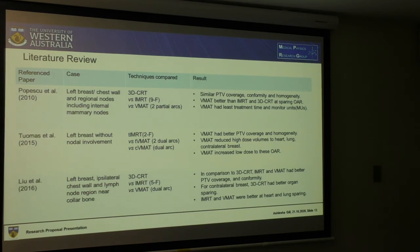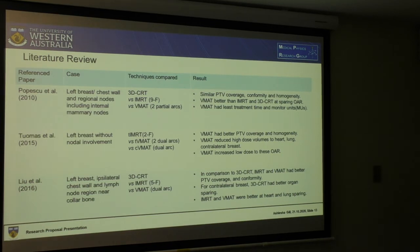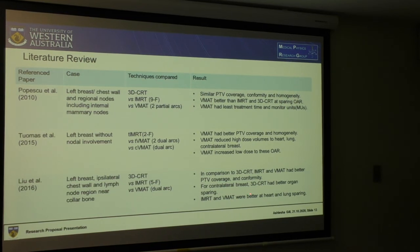These are a few relevant papers. In 2010, Popescu included the nodes along with the left breast and chest wall, finding all had good PTV coverage, with VMAT better than IMRT and 3D CRT at sparing organs at risk, and the least treatment time and monitor units. Thomas showed VMAT had better PTV coverage and homogeneity than IMRT, reducing high dose to heart, lung, and contralateral breast, but increasing the low dose to them. In 2016, Leo showed that IMRT and VMAT had better PTV coverage and conformity than 3D CRT; for heart and lung, IMRT and VMAT had better organ sparing.